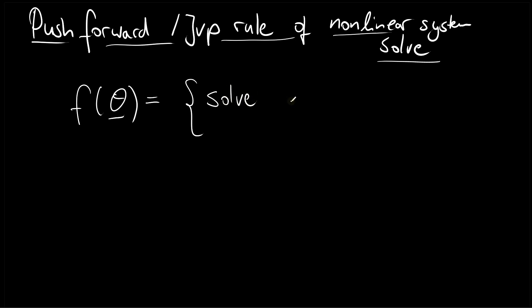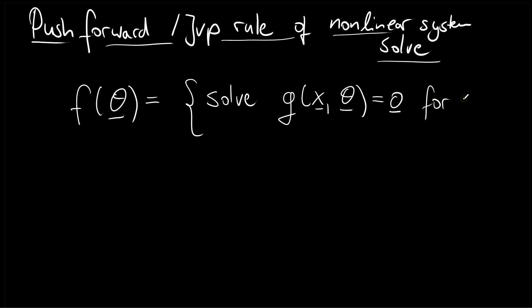We solve an optimality criterion or zero condition with a function g which depends on the value x as well as on the parameter vector theta, and this condition is equal to zero — we solve for x. So the output of the function f is the roots of that parameterized function, which we call the vector x. This problem typically arises in the solution to nonlinear partial differential equations like the Navier-Stokes equations, but you can also find it in deep equilibrium models, which are a recent trend in deep learning.